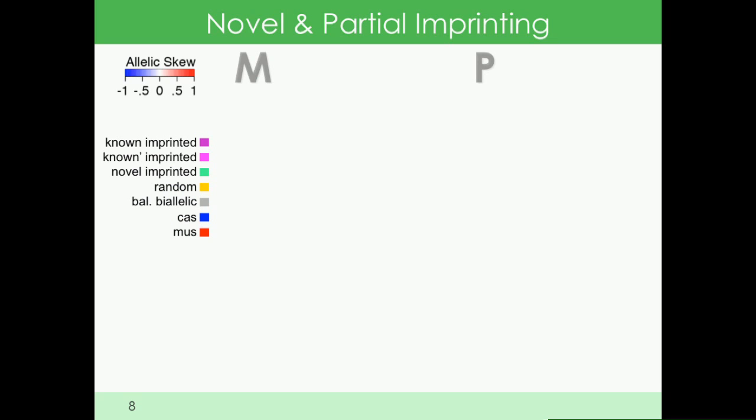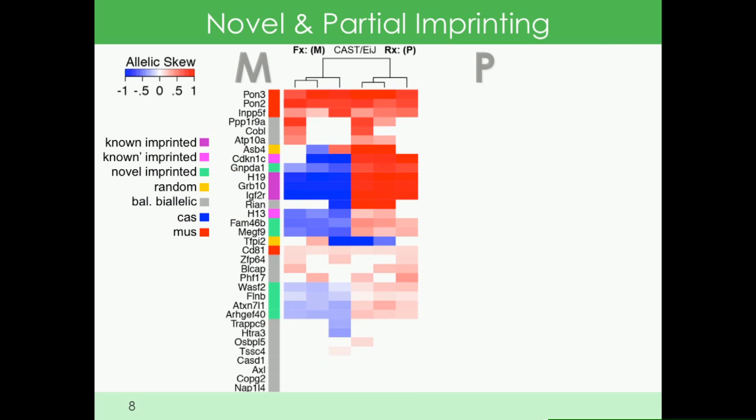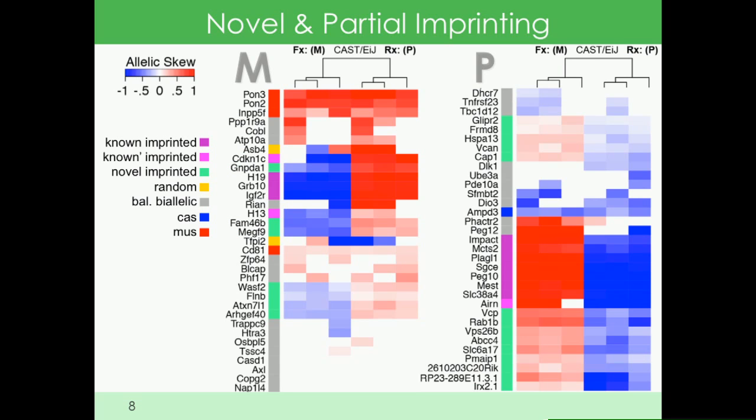When we compare all known imprinted genes with the ones we identified, a pattern emerges quickly: canonical imprinted genes show very strong difference in expression—strong allelic imbalance—whereas these novel genes are much more subtle.